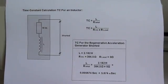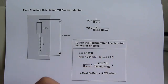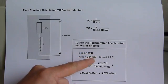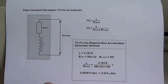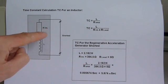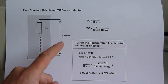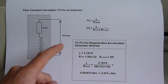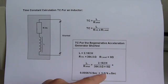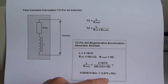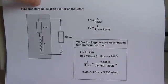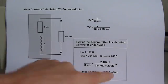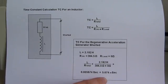One more thing: I have done the same calculation for the regenerative acceleration generator at 2.182 Henrys and 384.5 ohms internal resistance, but now in the case of a short circuit. You can see that when a short circuit is introduced to the regenerative acceleration generator coil, the time constant is even bigger than the 3.7 milliseconds seen in the load example. So under load it gives 3.73 milliseconds, and when you short it, you get an even bigger time constant.